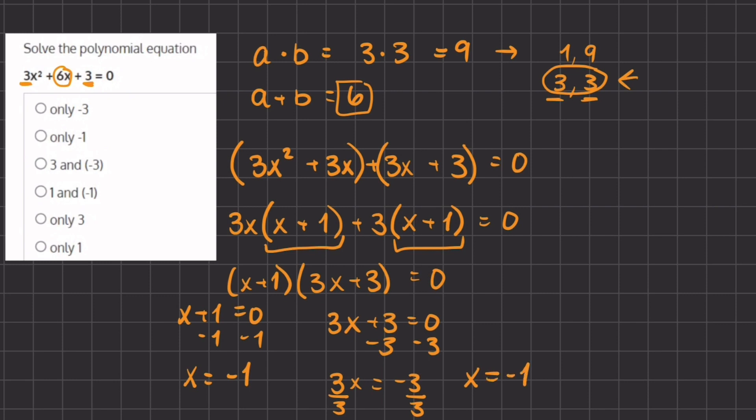So both of our x's equal negative 1. If we take a look at our answers, answer B represents the correct answer because we only have the answer of x to equal negative 1, and therefore B will be our final answer.